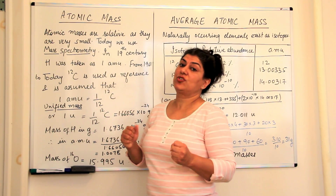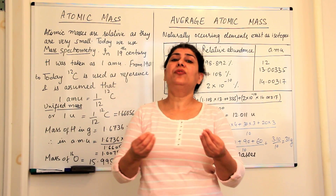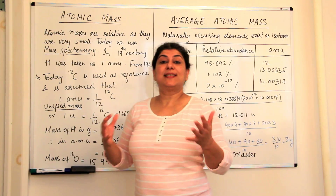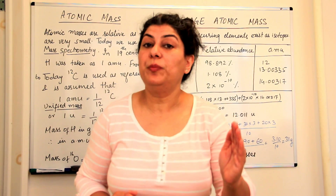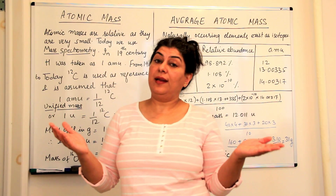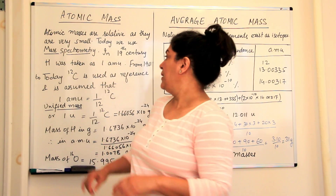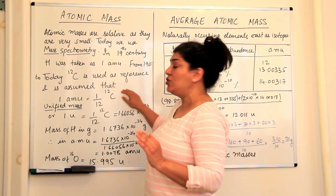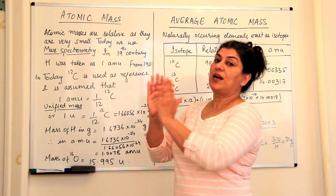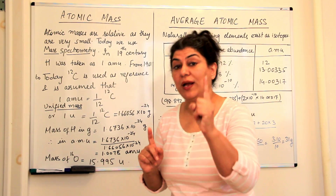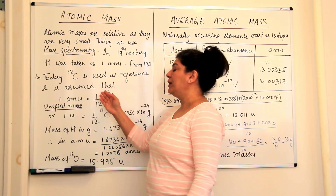By then, better techniques of finding out the mass of an atom were available. Mass spectrometry is a technique used even today by which you can very accurately find out the masses of atoms. So what was decided in 1961? It was decided that the reference would not be hydrogen but carbon — specifically carbon-12. One atomic mass unit would be equal to 1/12 the mass of carbon-12. The mass of carbon-12 is 12, so one AMU = 1/12 of carbon-12.